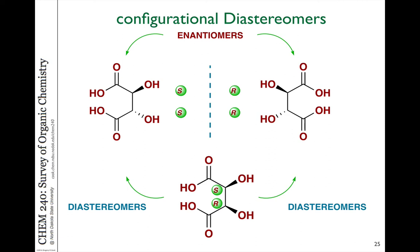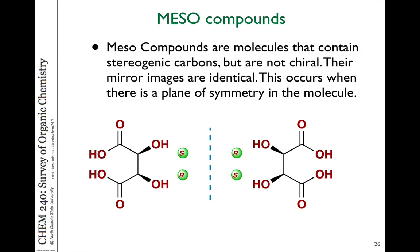Configurational diastereomers have more than one stereogenic carbon where, if you're comparing two molecules that are diastereomers, at least one configuration is the same and some have changed. This molecule also has additional symmetry which creates a situation we refer to as meso compounds. These are molecules that contain stereogenic carbons but are not chiral because there's a plane of symmetry in the molecule. Thus, its mirror image is going to be identical.